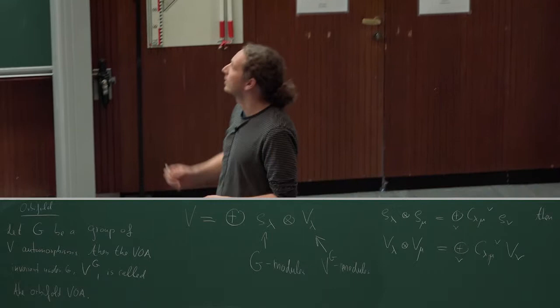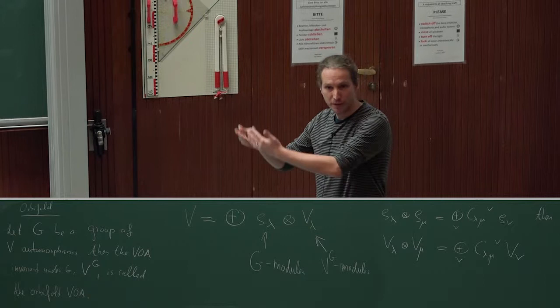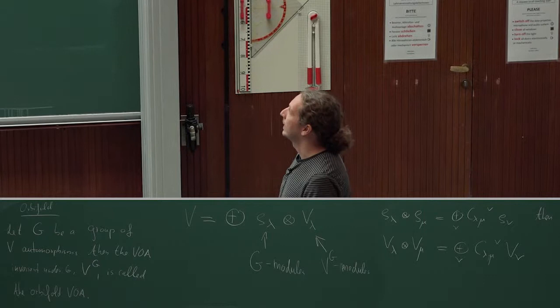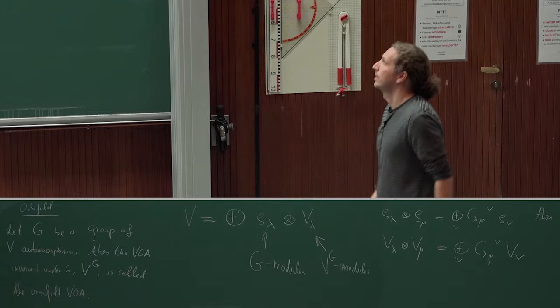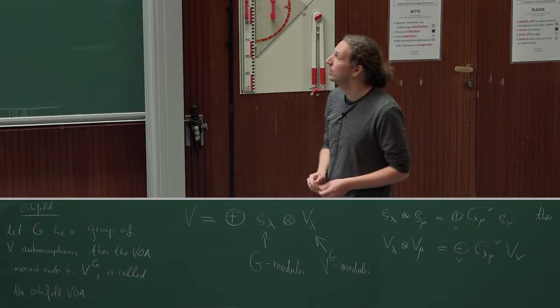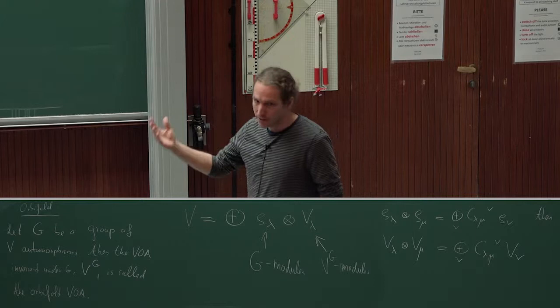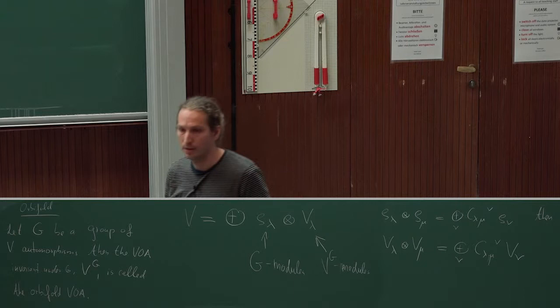I assume that G acts semi-simply on V, so that means it's a direct sum of G modules coming with some multiplicity, and the multiplicity is usually an infinite-dimensional vector space, and the orbifold VOA acts on this. This is a classical theorem due to Howell that one can do this decomposition — not an obvious statement by any means, but it comes from classical algebra.